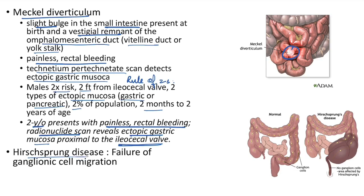Hirschsprung disease: failure of ganglionic cell migration. This leads to abdominal distension. The child presents with delayed passage of meconium.